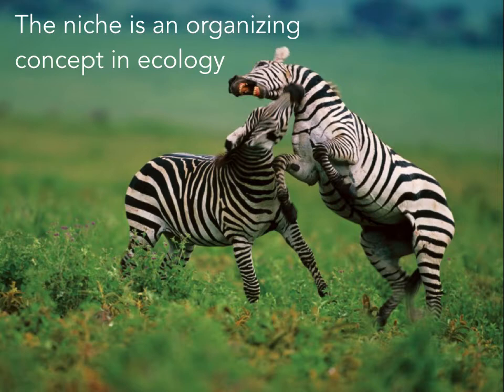In our discussion of evolutionary ecology, we've talked about how through natural selection, each species has evolved a particular set of adaptations that increases its overall fitness under the prevailing environmental conditions in which it lives. In our lecture on life histories, we explored how through its unique set of adaptations, each species is a unique solution to the challenge of survival and reproduction in different environments. This constitutes the species' life history.